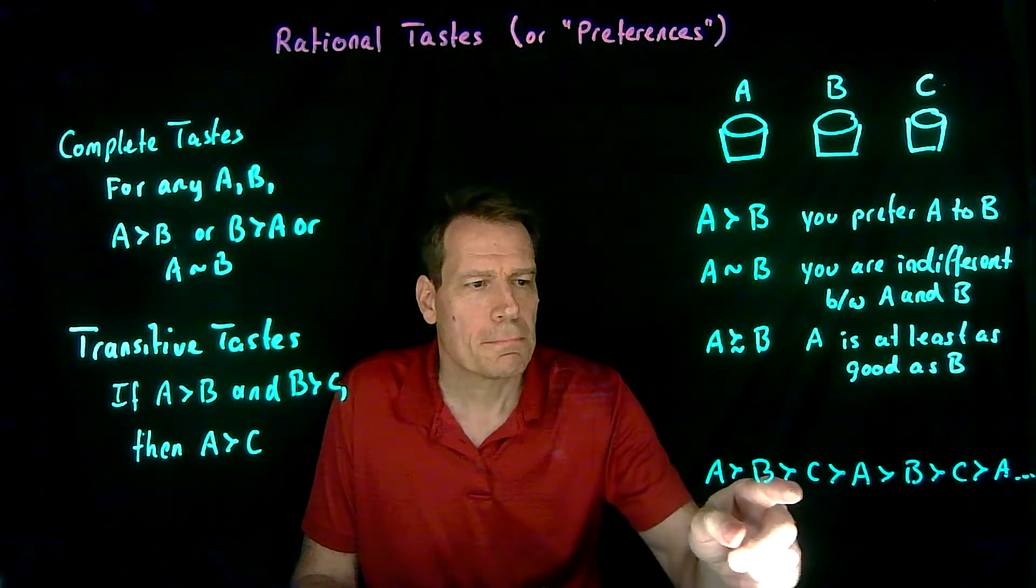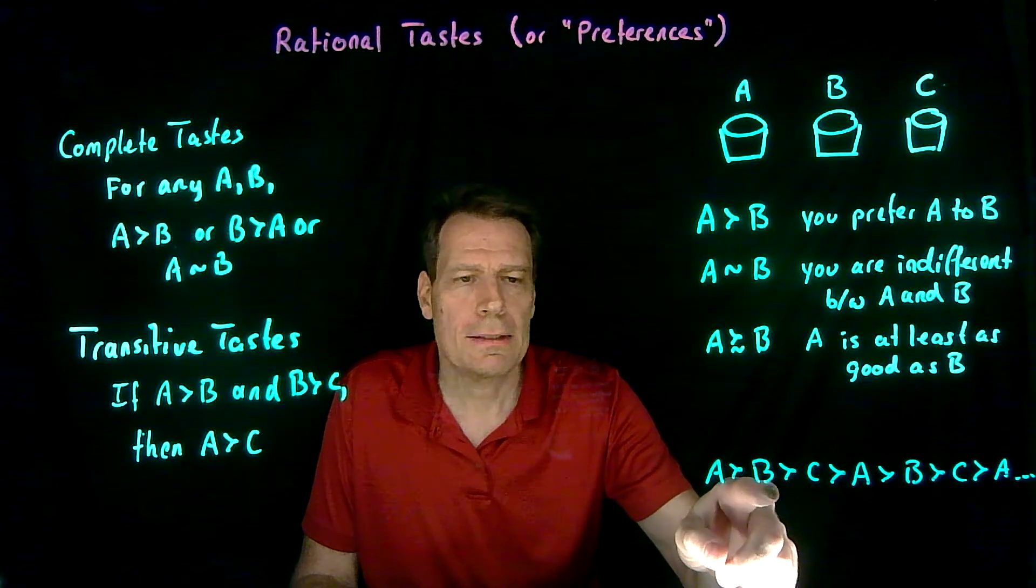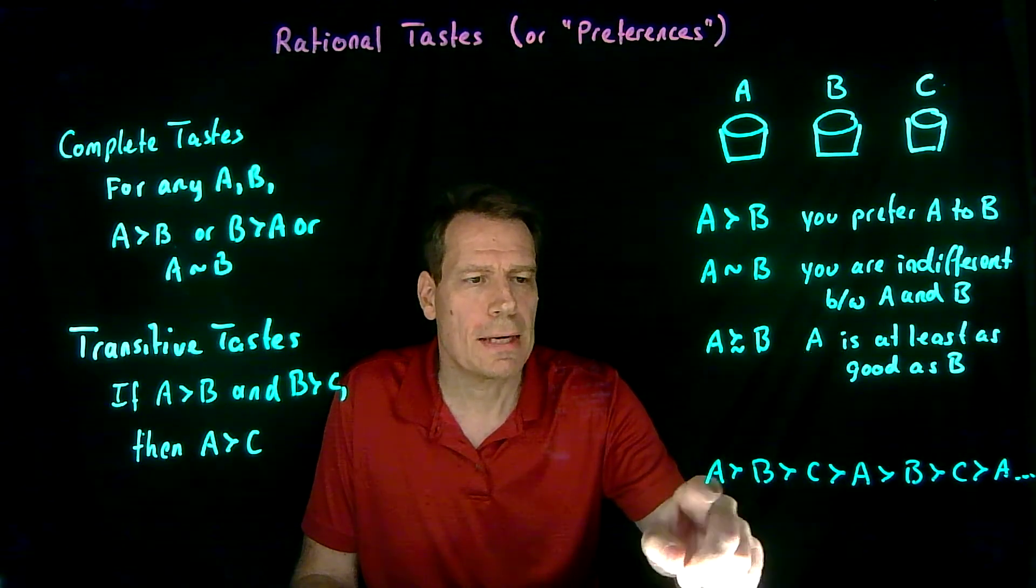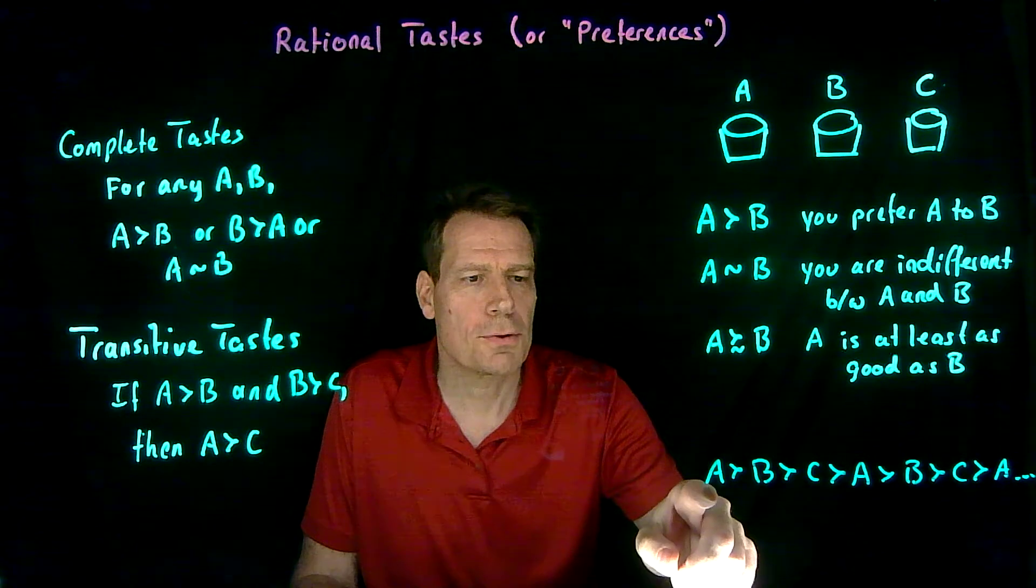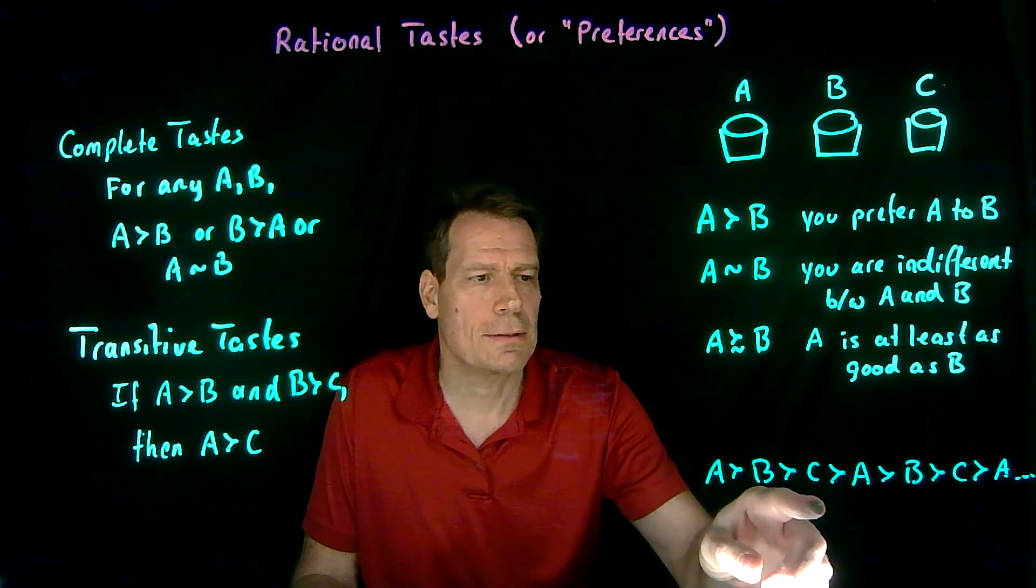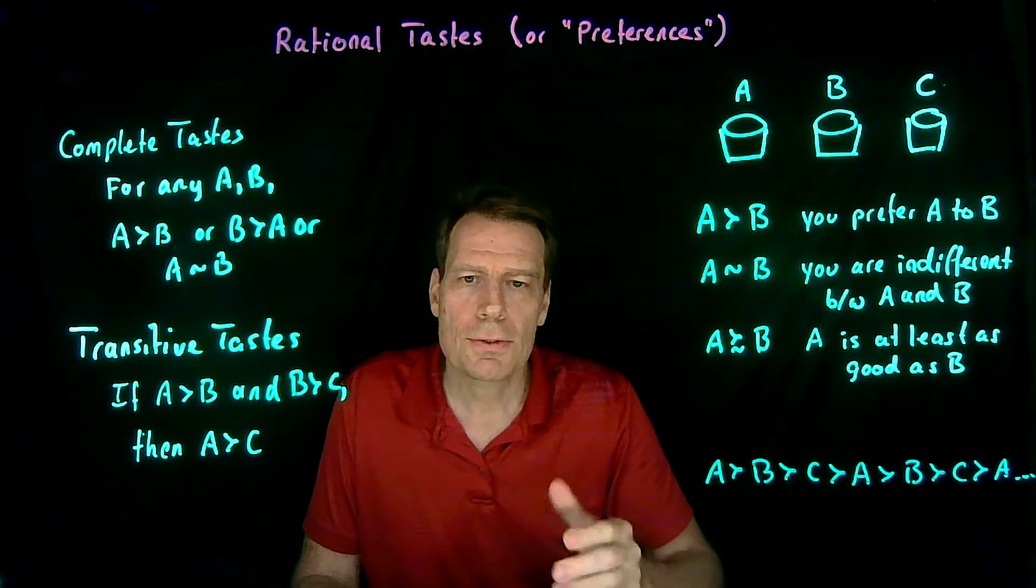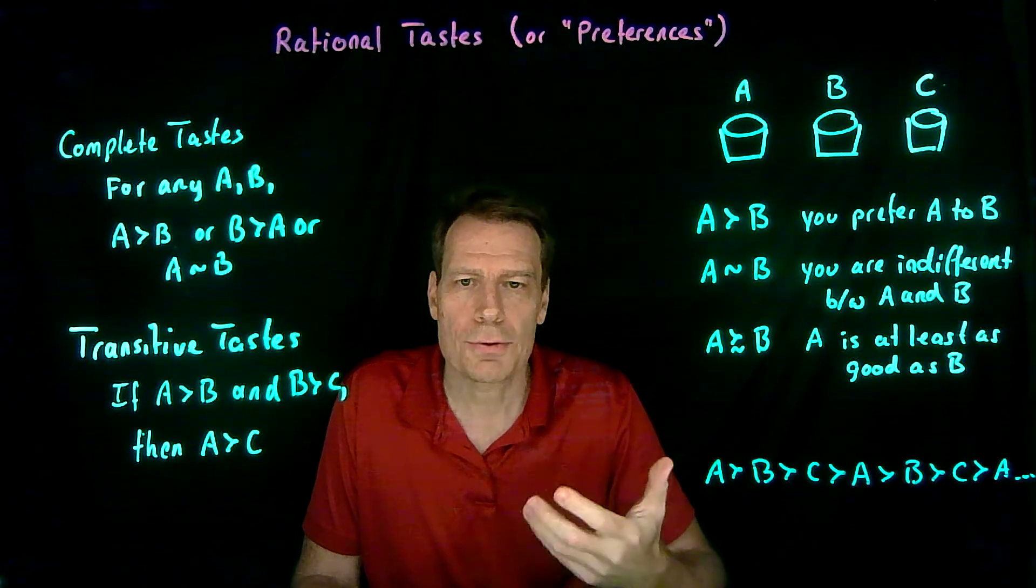I give you a choice between B and C, you pick B. I give you a choice between A and B, you pick A. Then I give you a choice just to check between A and C and you say no, you like C better. So there's no way to settle on a final choice.